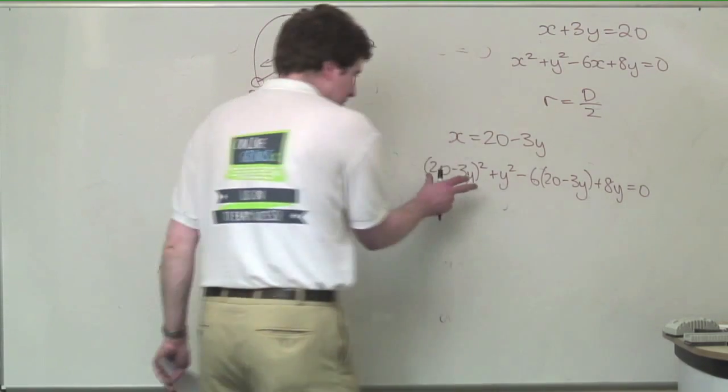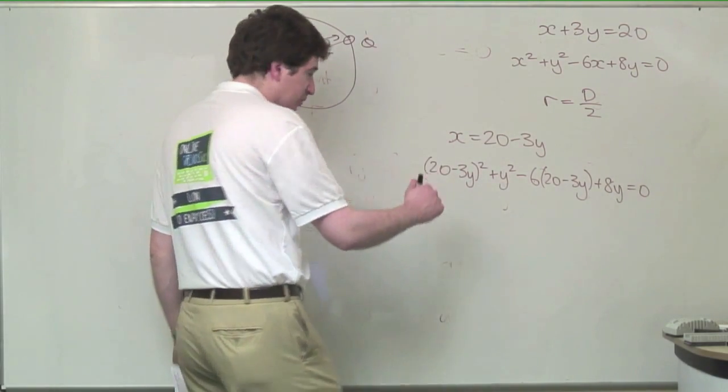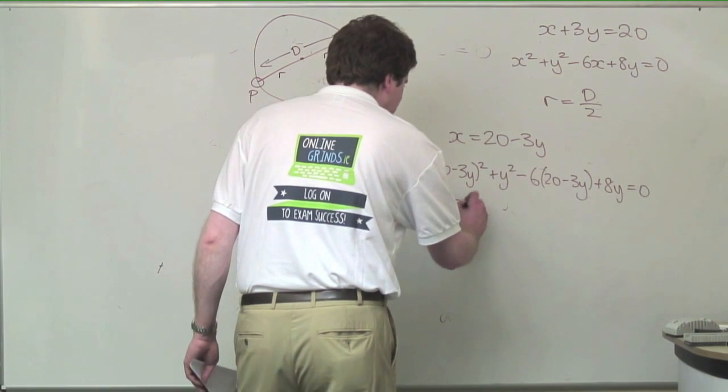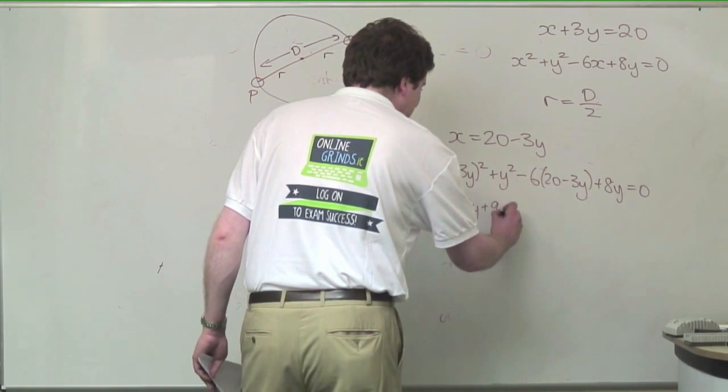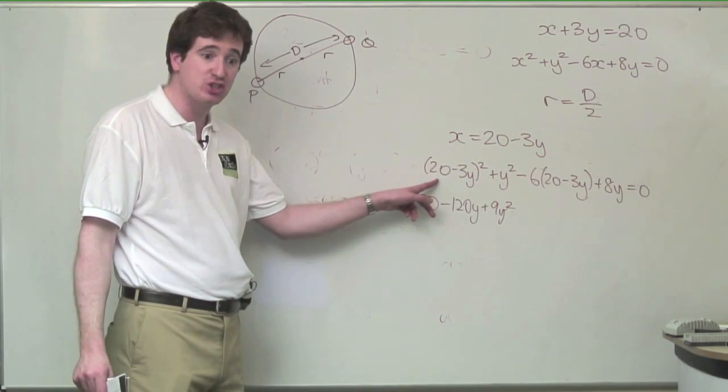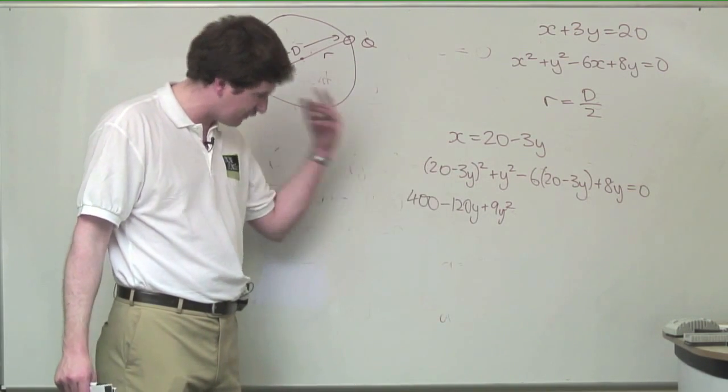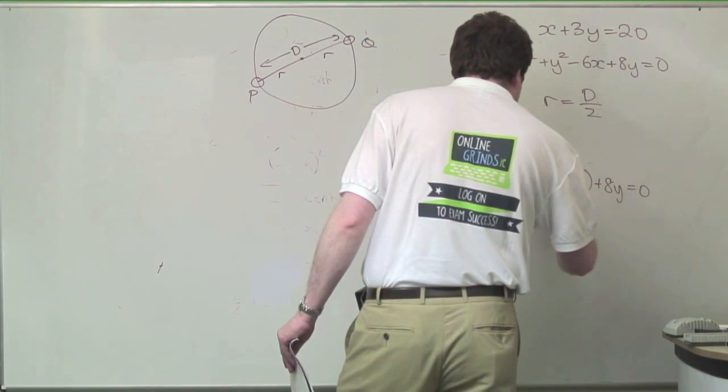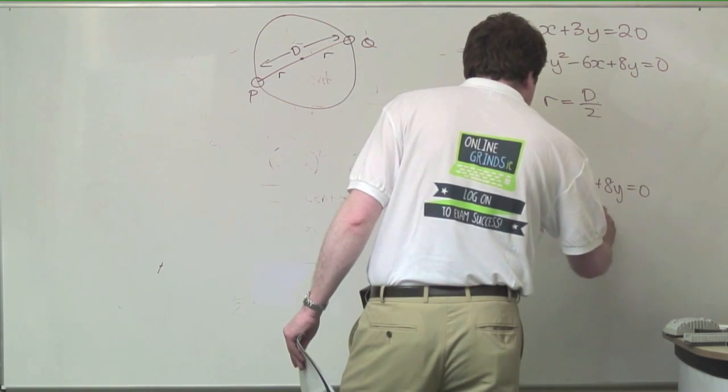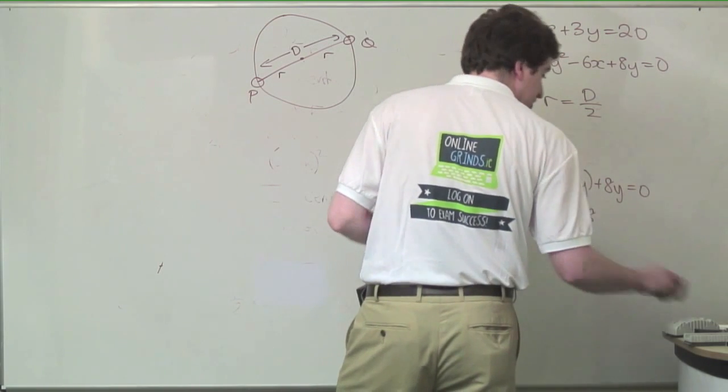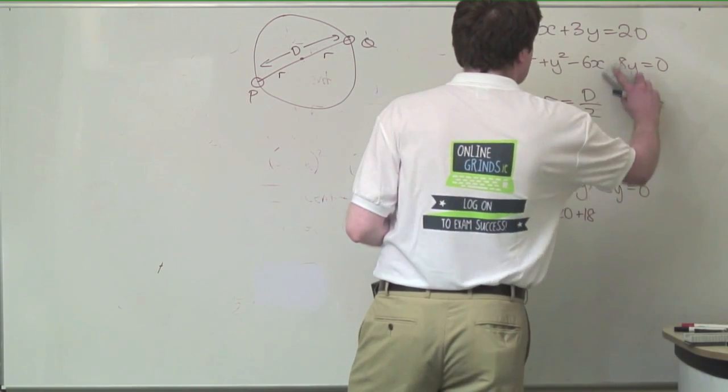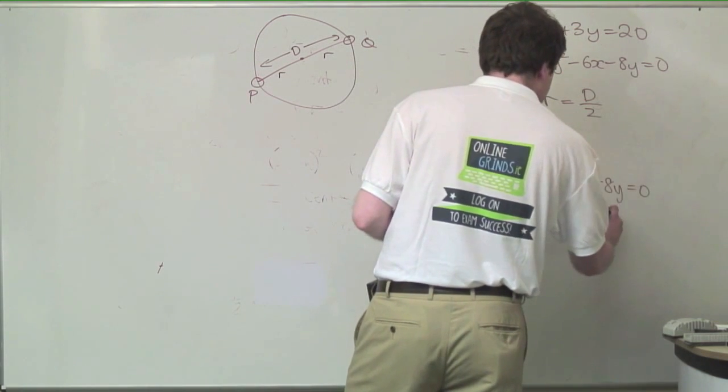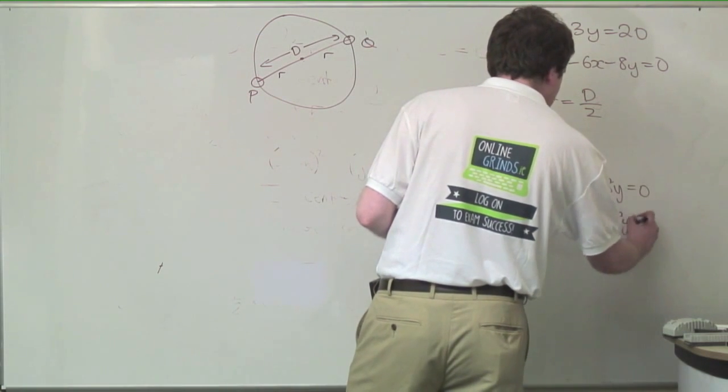So I promise that I am doing it correctly when I do this in one go. That's equal to 400 minus 120y plus 9y squared. Plus y squared minus 120 plus 18y. I obviously should have had a minus 8y from the very beginning there. So we have 18y minus 8y equals 0.